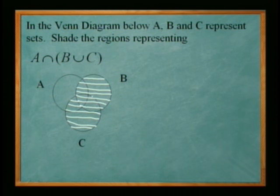All right, so that's the shaded region is B union C. All right, so now I'm going to shade A. So A is this whole circle.